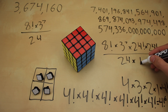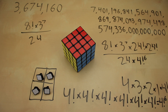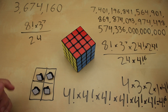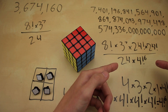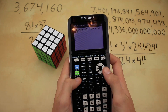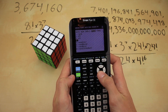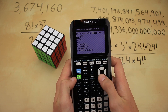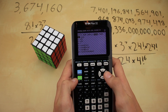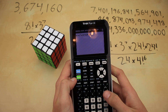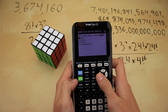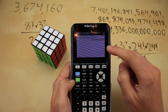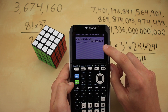We should now have correctly calculated the total number of possible positions on a 4x4 Rubik's Cube. Plugging the full expression into a calculator: 8! times 3 to the 7th power times 24! times another 24!, all divided by 24 and also divided by 4! to the 6th power. We get 7.401 times 10 to the 45 — an amazingly huge number.